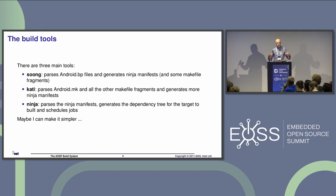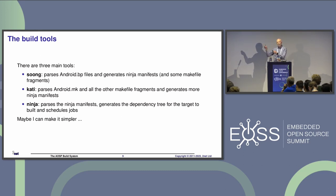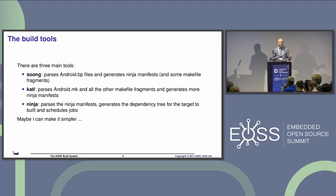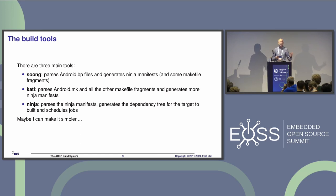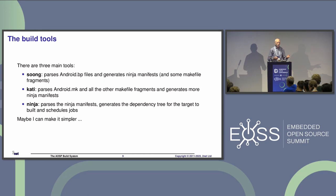Now I want to look under the hood and see what's actually going on when you do this build. It turns out there are three components to building AOSP: Soong, Kati, and Ninja. It's kind of complicated, so I've got a graphical example to help put this all together.